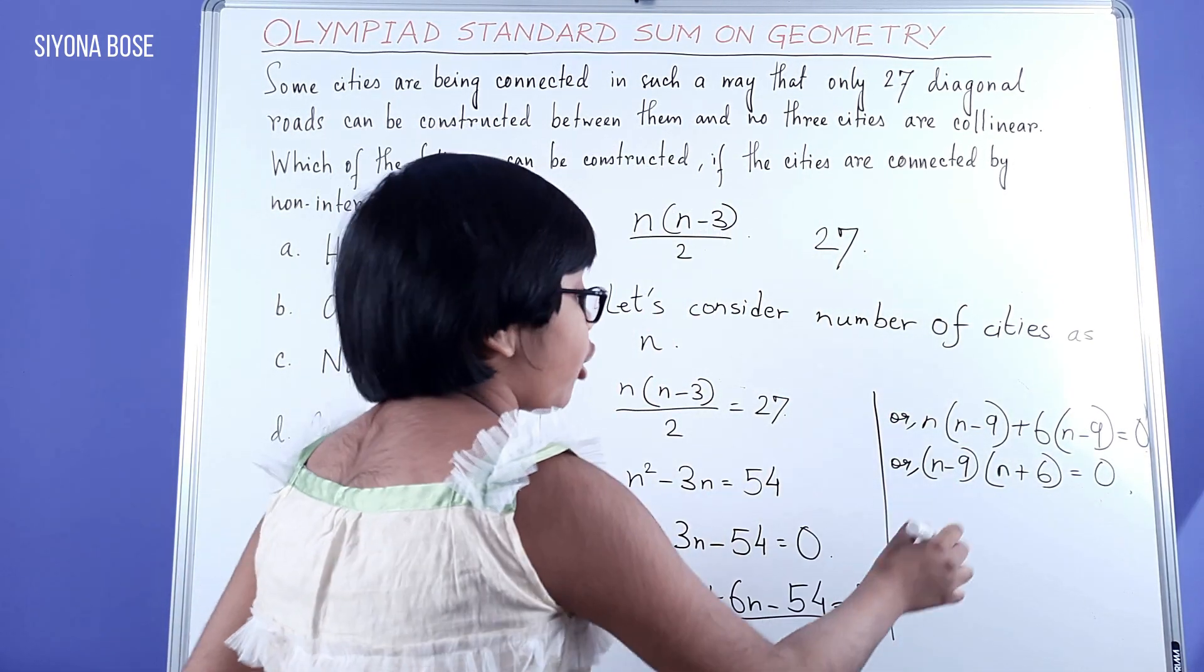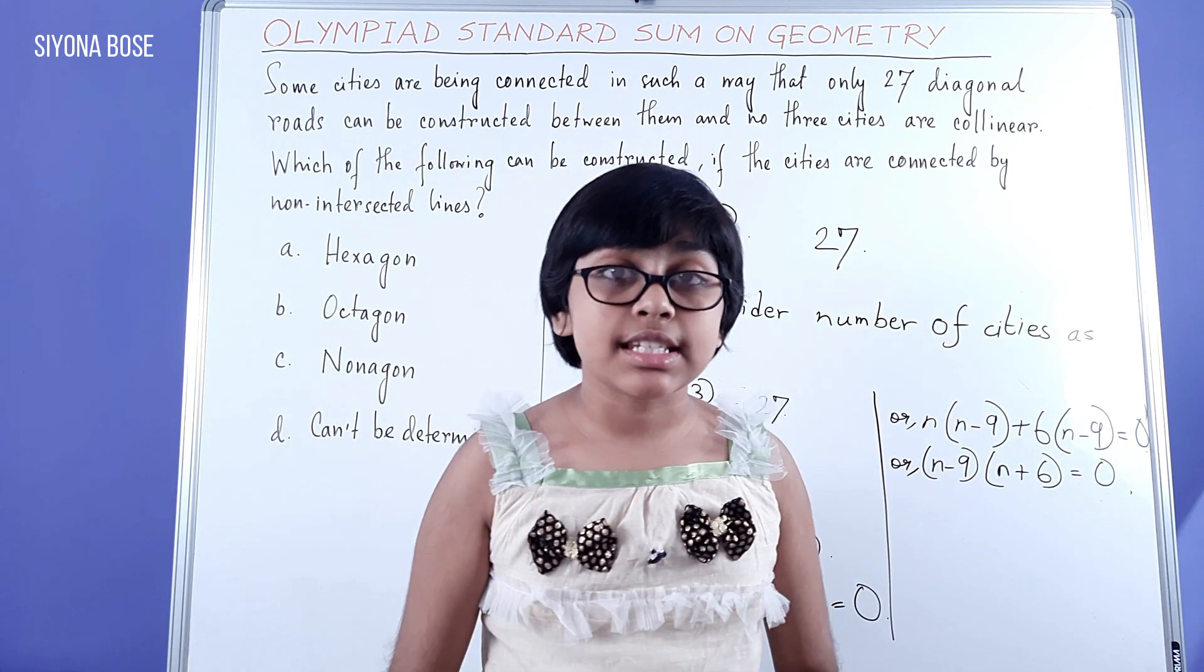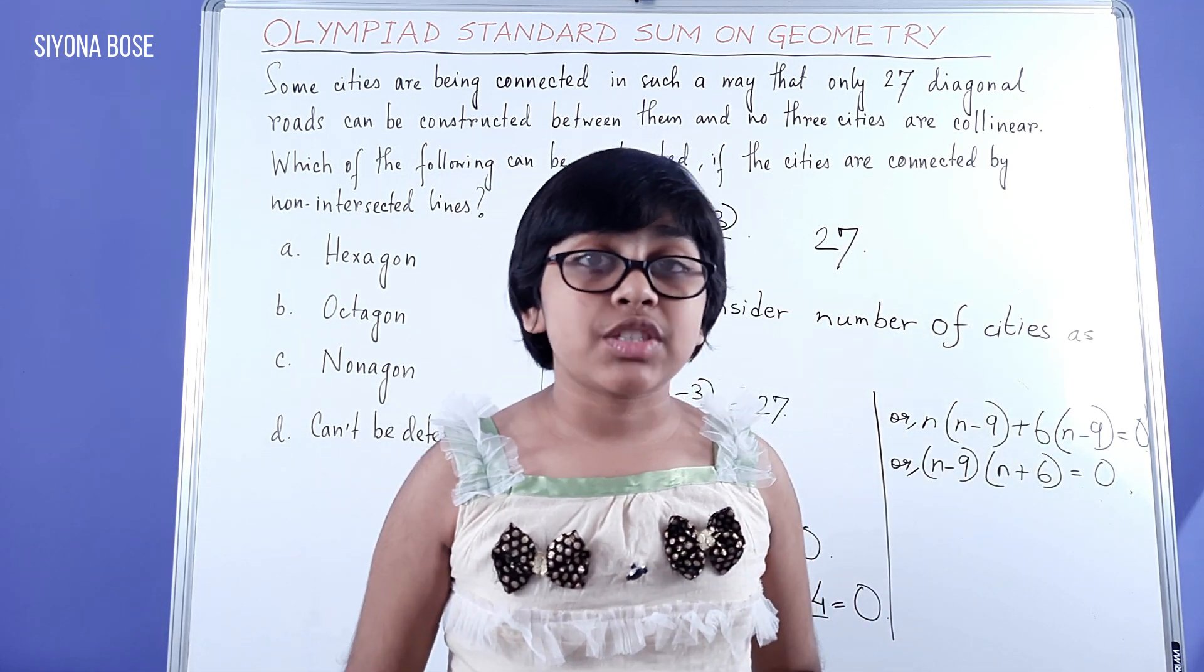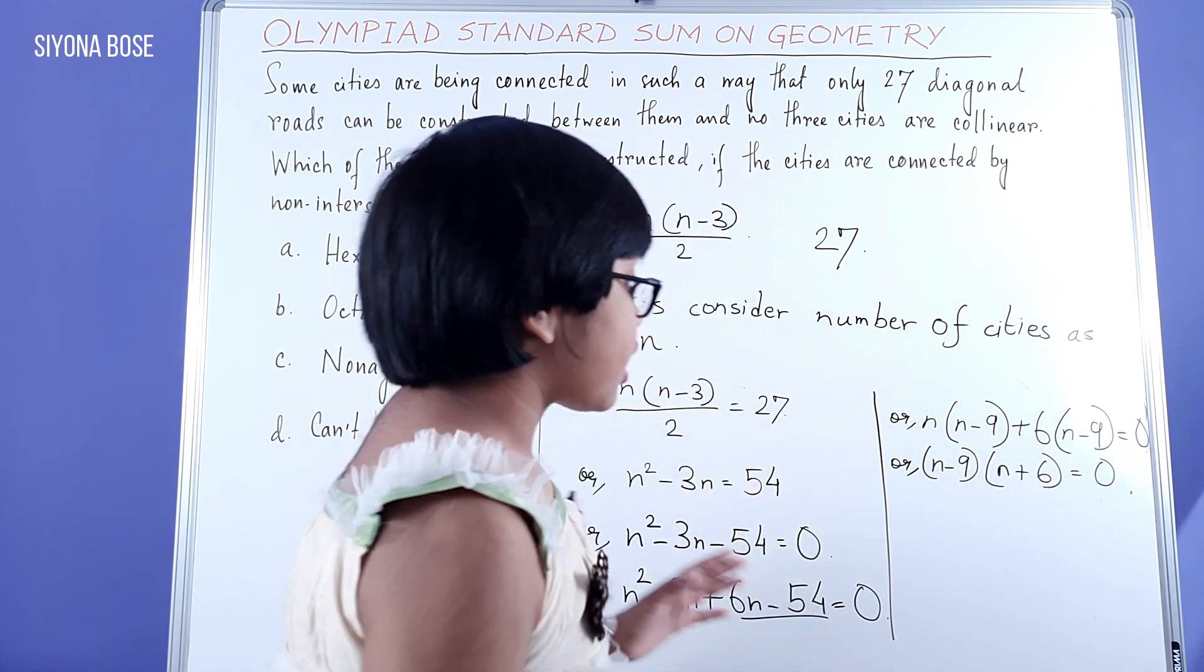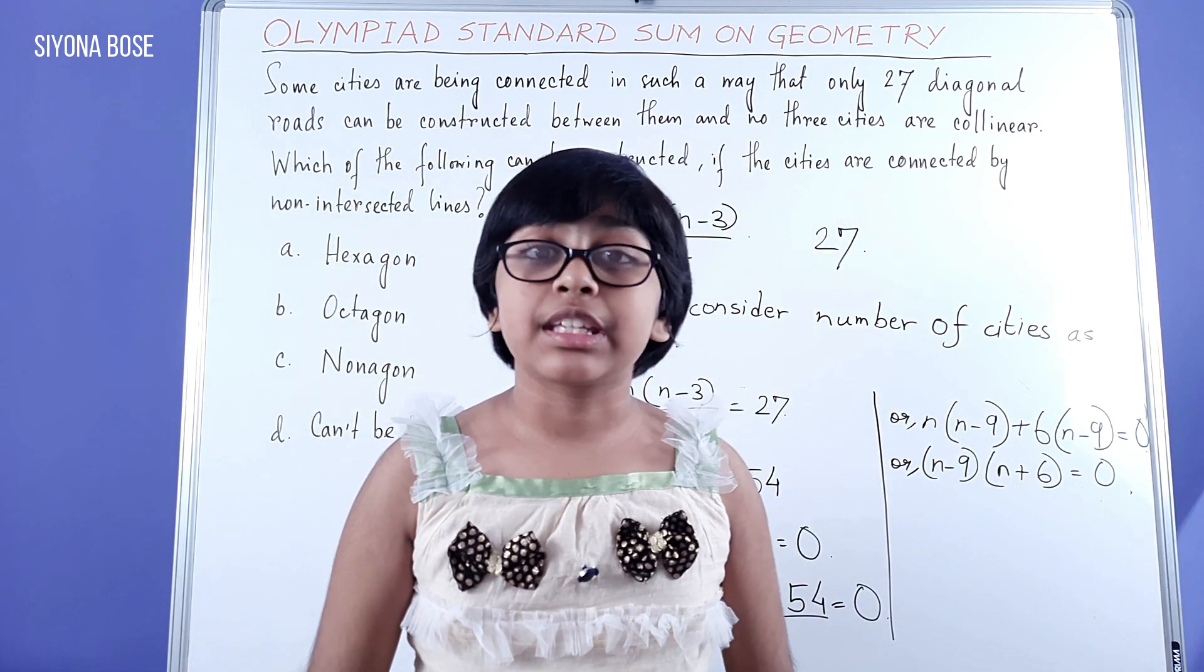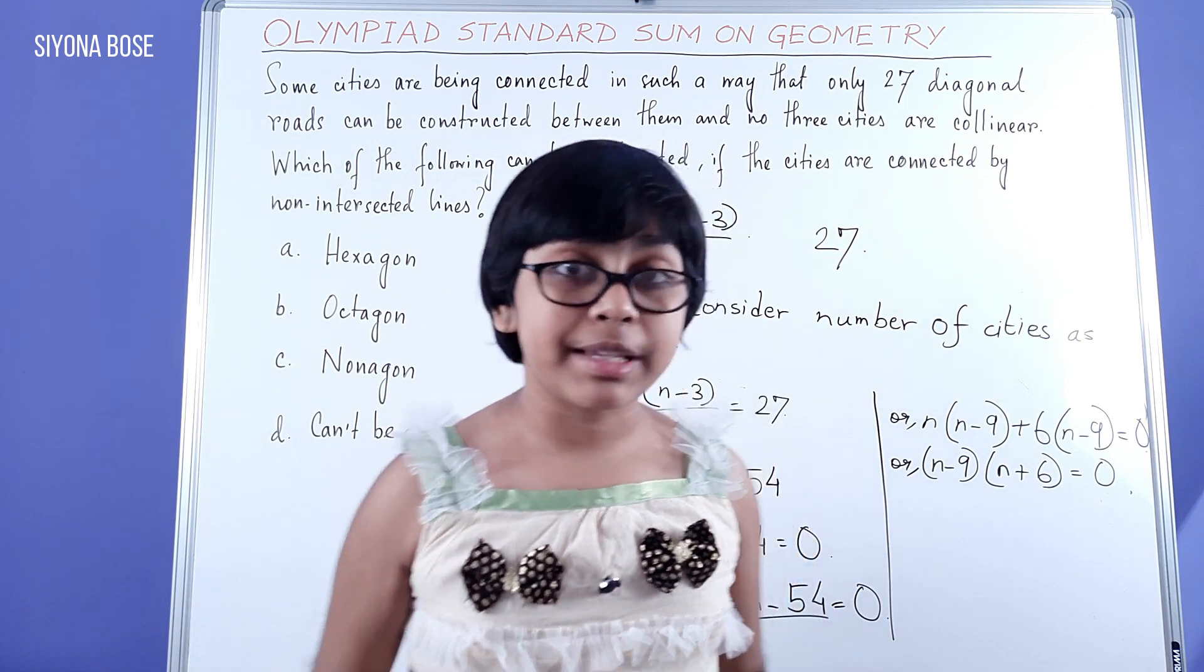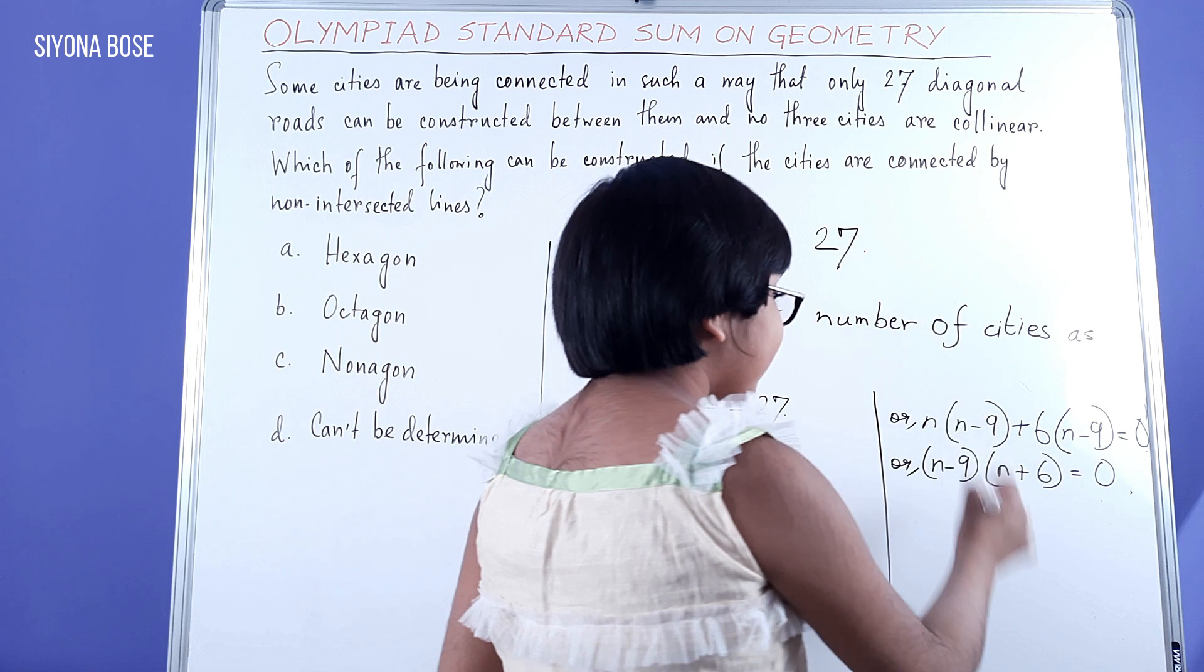Now in this scenario, any one of them, either n minus 9 or n plus 6 can be 0, but in this case there is some problem. Since we have considered n to be a number of cities, so n is a natural number and n cannot be 0.